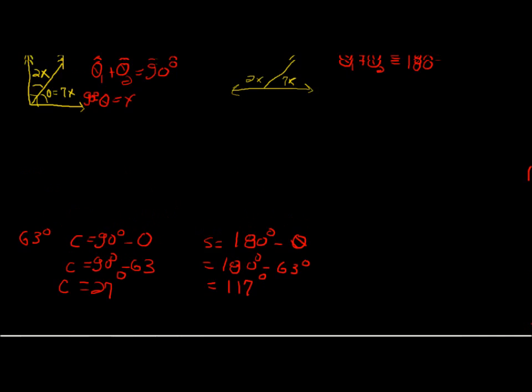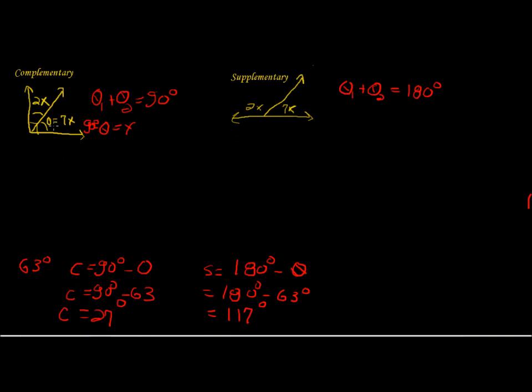So here, we have a right angle, and we need to find x to measure the unknown angles, with theta1 being 2x and theta2 being 7x. So we already know a complement equals 90 degrees. So we'll set theta1 plus theta2 equal to 90, and just plug in our values.